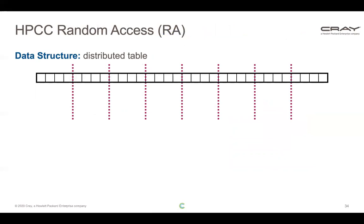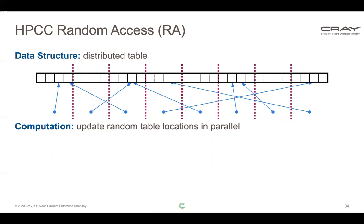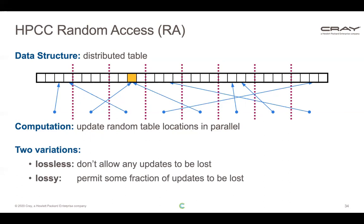Now let's look at a slightly more interesting example — a benchmark called Random Access, part of the HPC Challenge benchmark suite. The idea is that we have a distributed table across all compute nodes, and we do a bunch of random updates to random locations in the table with random numbers in parallel. Each processor computes random numbers and updates table locations simultaneously. Sometimes there's a conflict where two things update simultaneously. We'll focus on the lossless version where no updates are dropped.